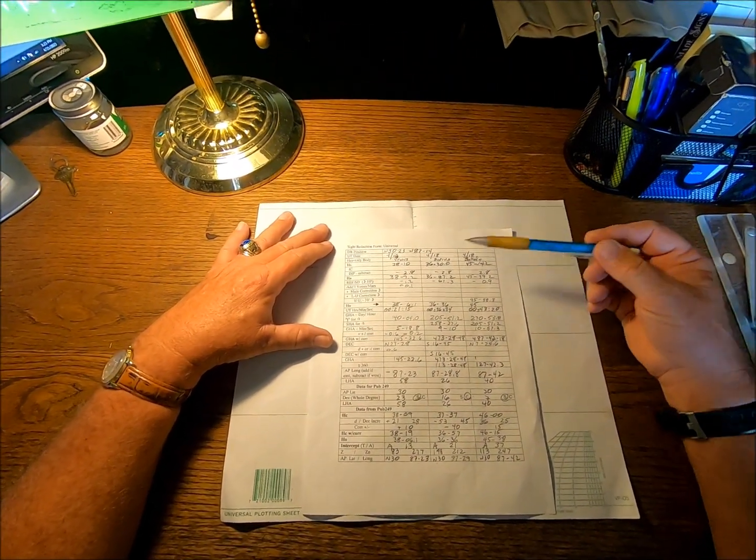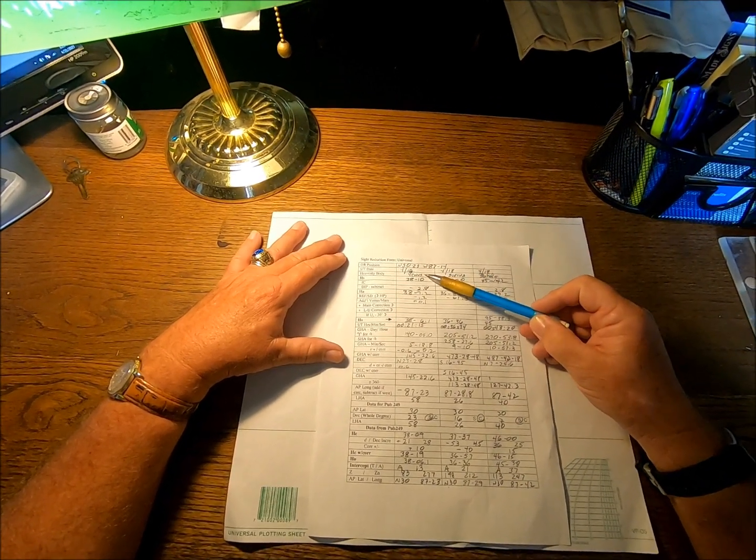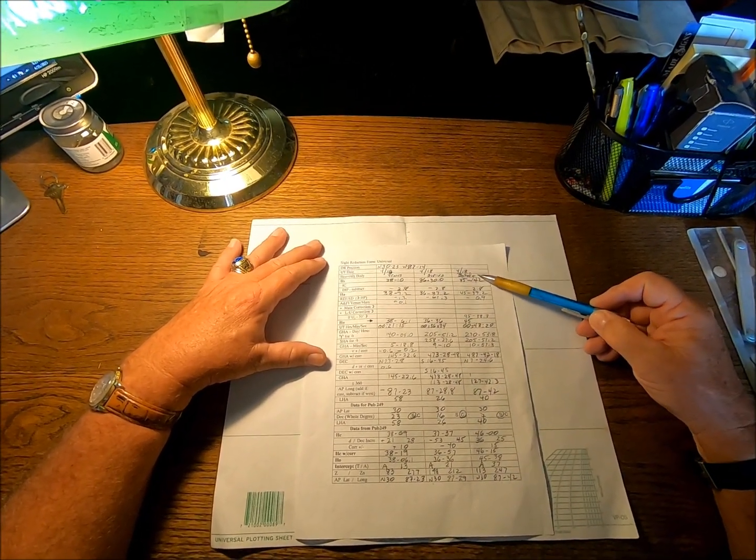This video should be pretty short because it's only about how to plot a three-star fix. Well, in this case, it's going to be a planet and two stars. We have Venus, Sirius, and Betelgeuse.